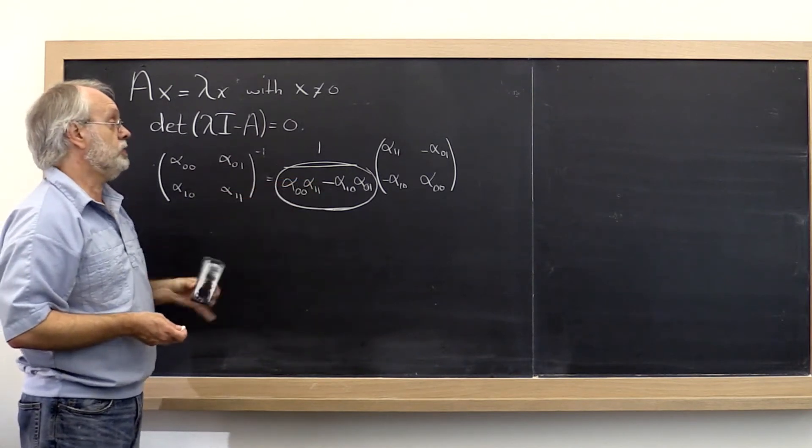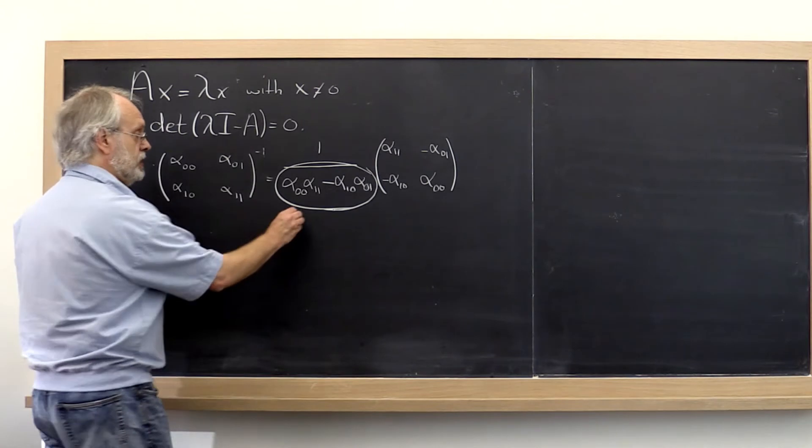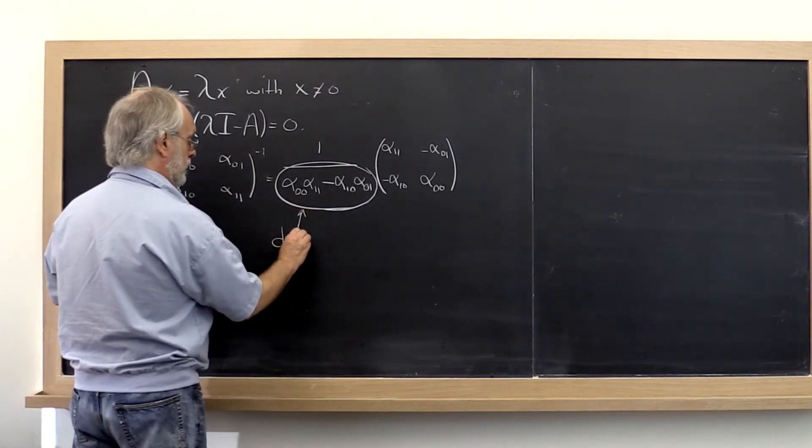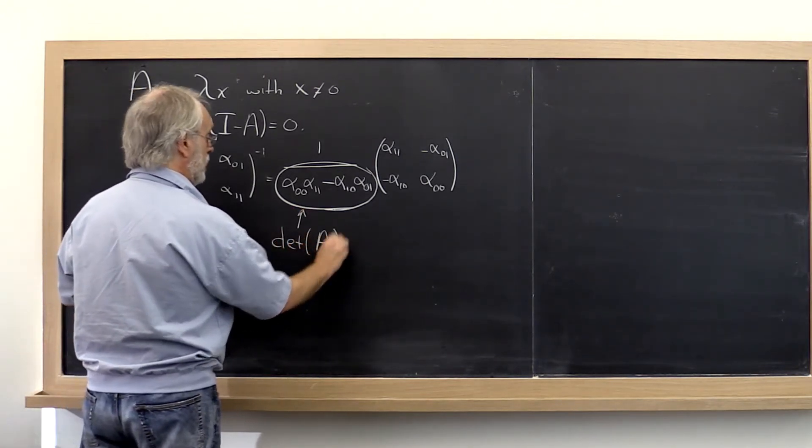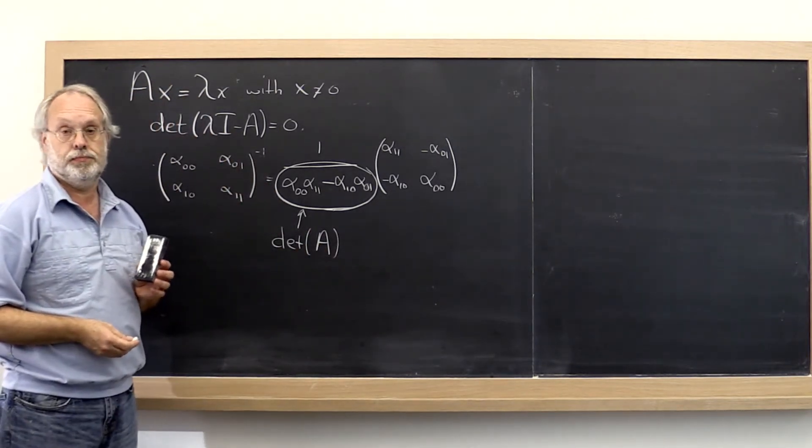And if it is equal to zero, then we don't. So this right here then is called the determinant of this matrix A, where this matrix A is this little 2 by 2.